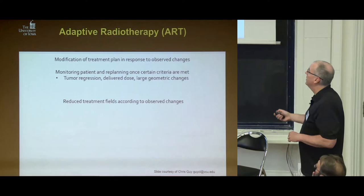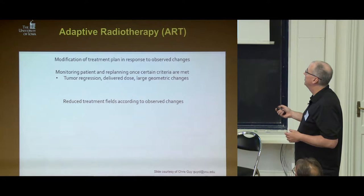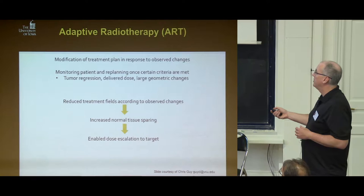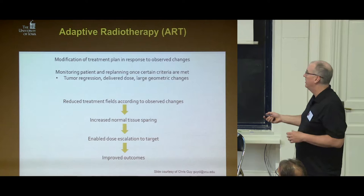Most of the time we want to reduce the treatment fields according to the observed change because things are getting smaller. This means we increase the sparing of normal tissue, and we enable dose escalation of the tumor — if we know exactly where the tumor is, we can give it even more dose. The overall goal is improved outcomes.